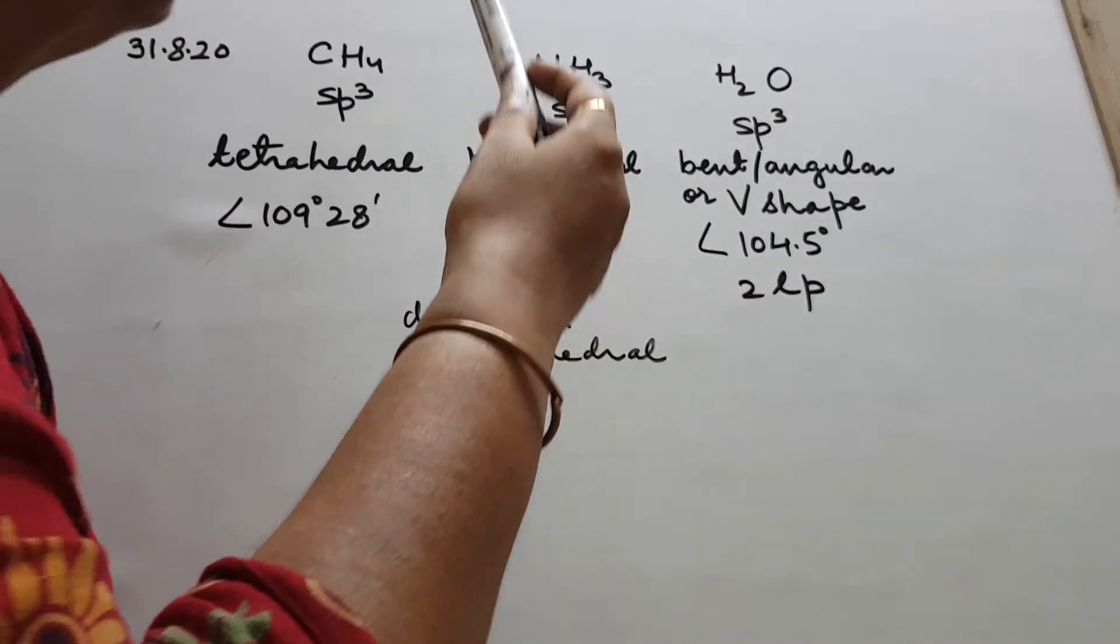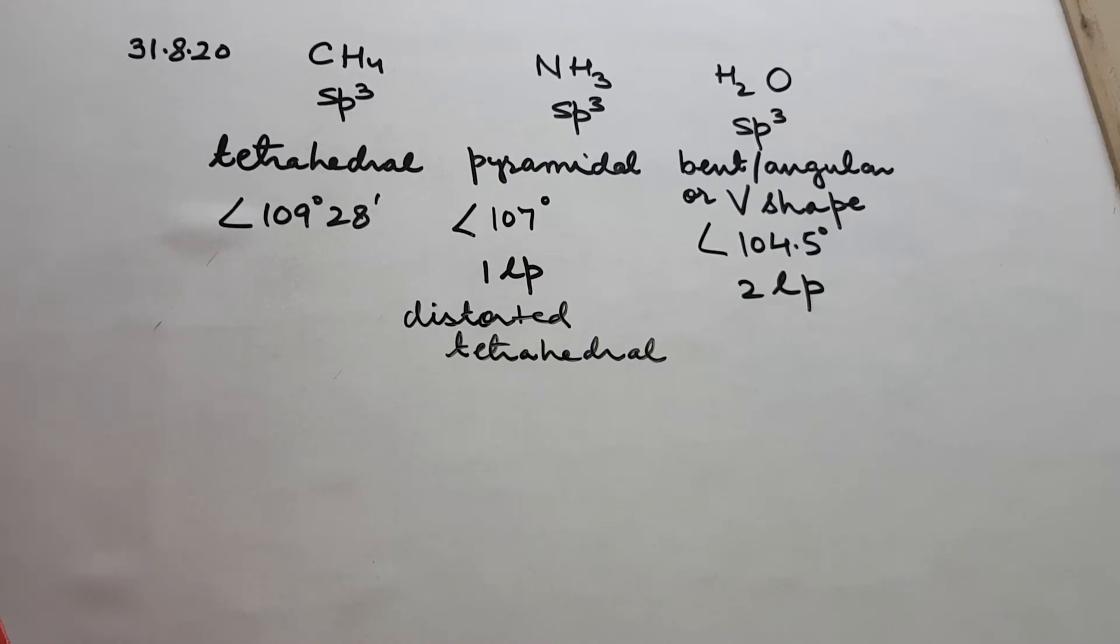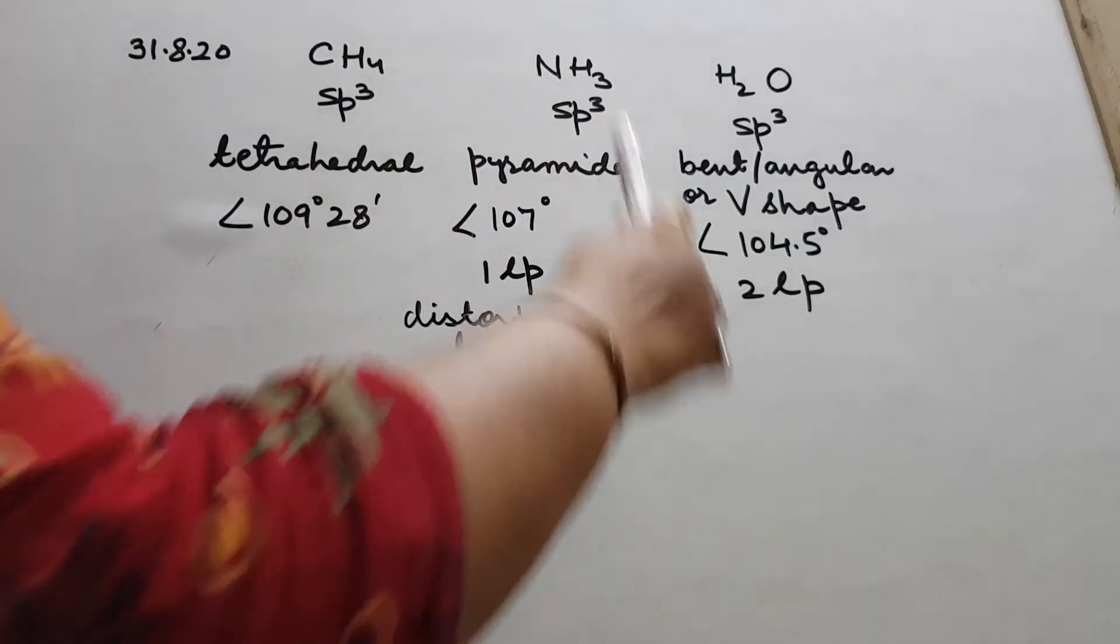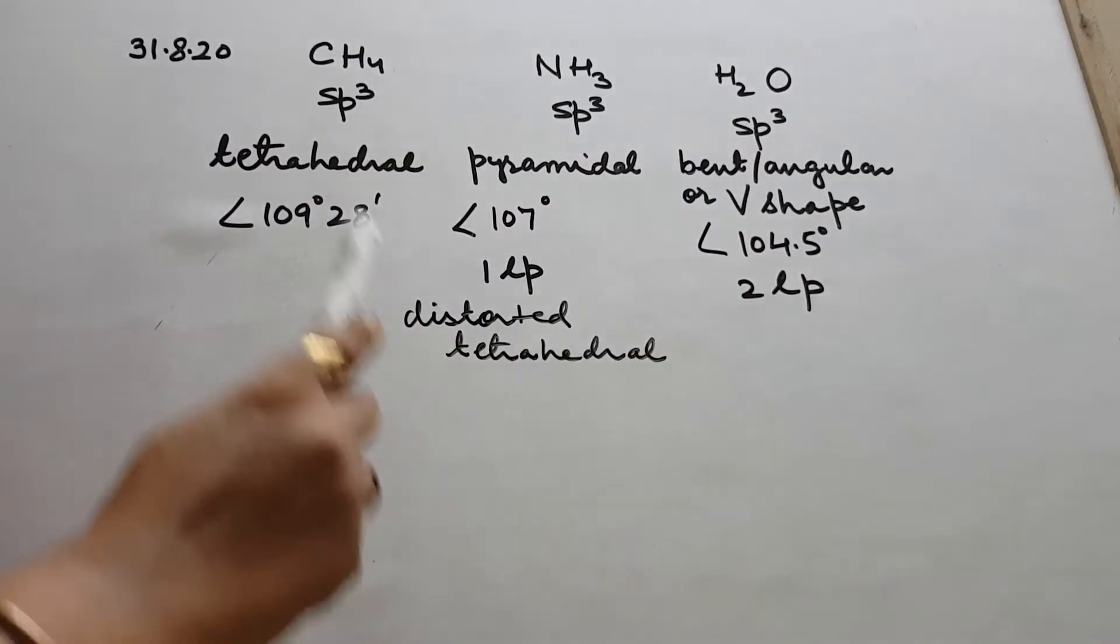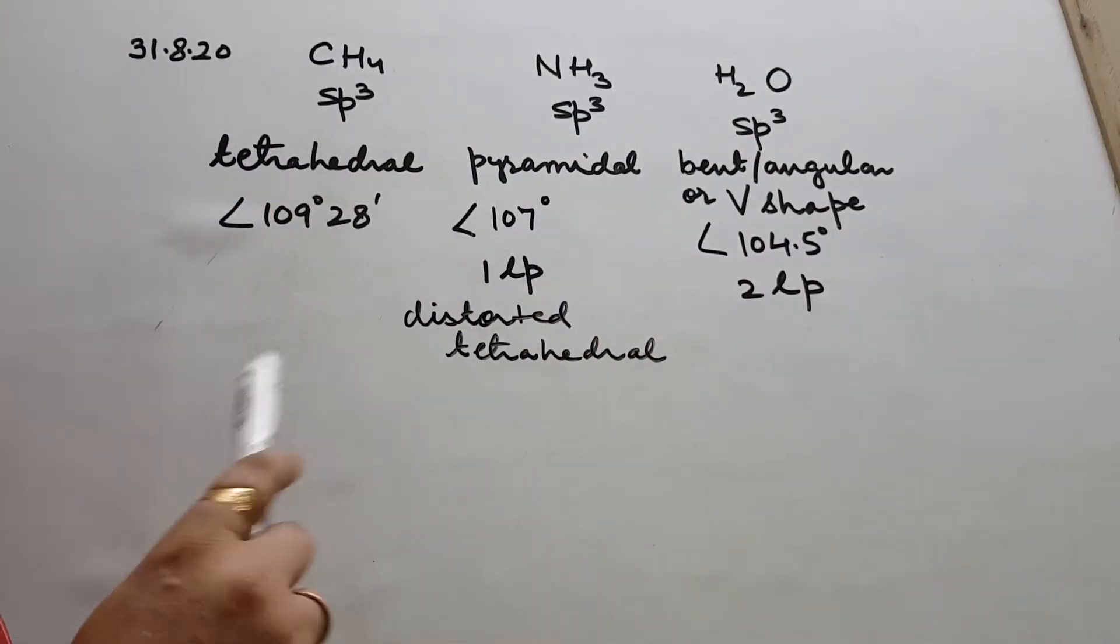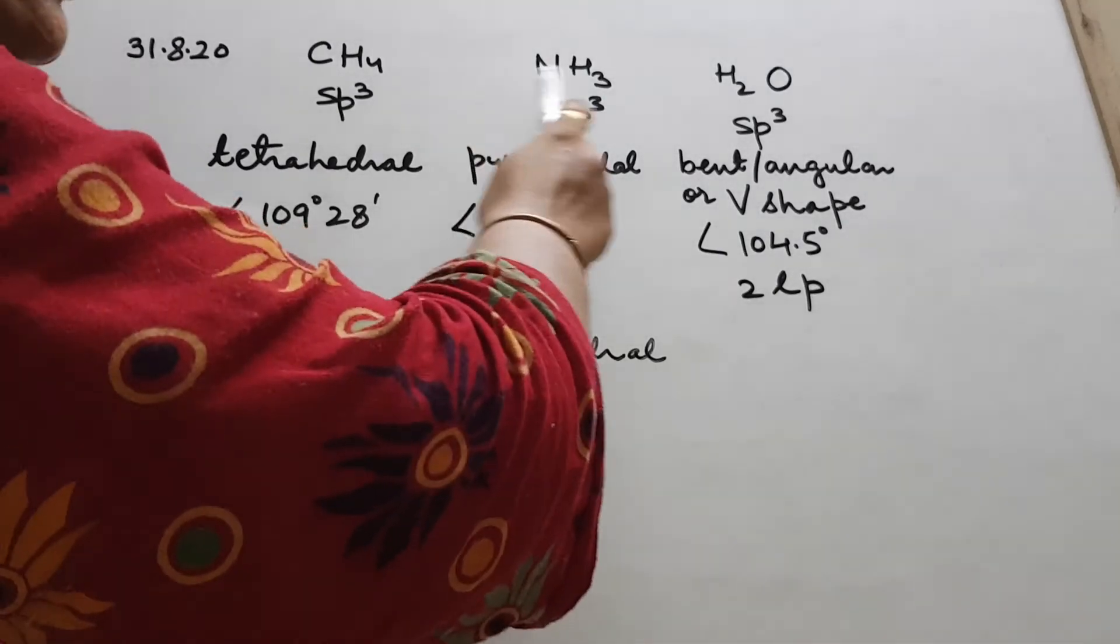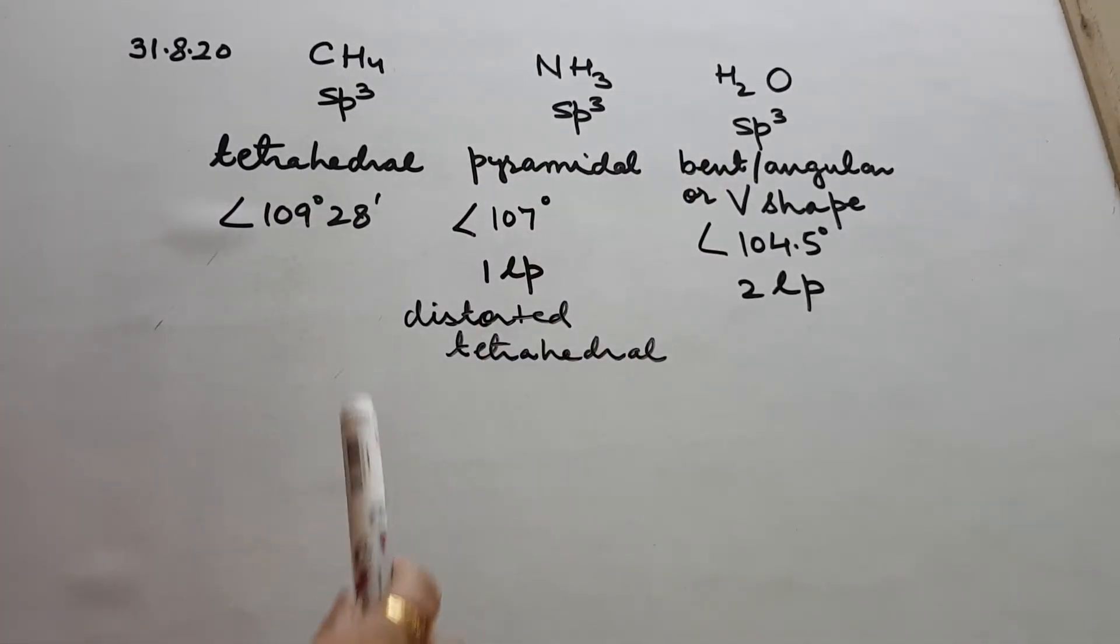This short video helps you remember that all these are sp3 but with different angles and different shapes, which is often asked. It's not that once it is sp3 it will always be tetrahedral. It depends upon bond pair and lone pair.